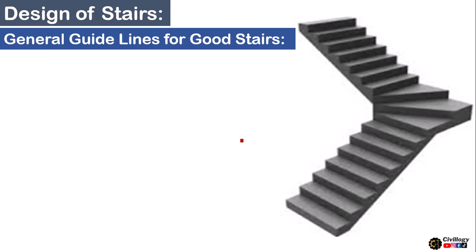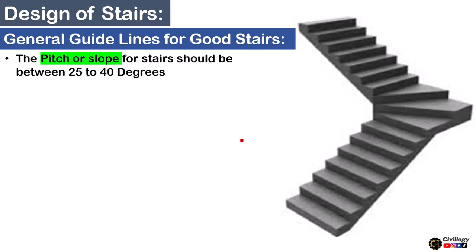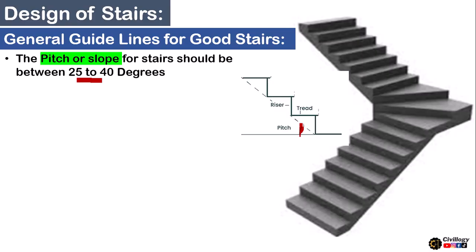First, let me tell you the general guidelines for good stairs. The first point is that the pitch or slope for stairs should be between 25 to 40 degrees. The pitch of a staircase is the angle which the waist slab of the stair makes with the horizontal — this angle is called the pitch or slope.